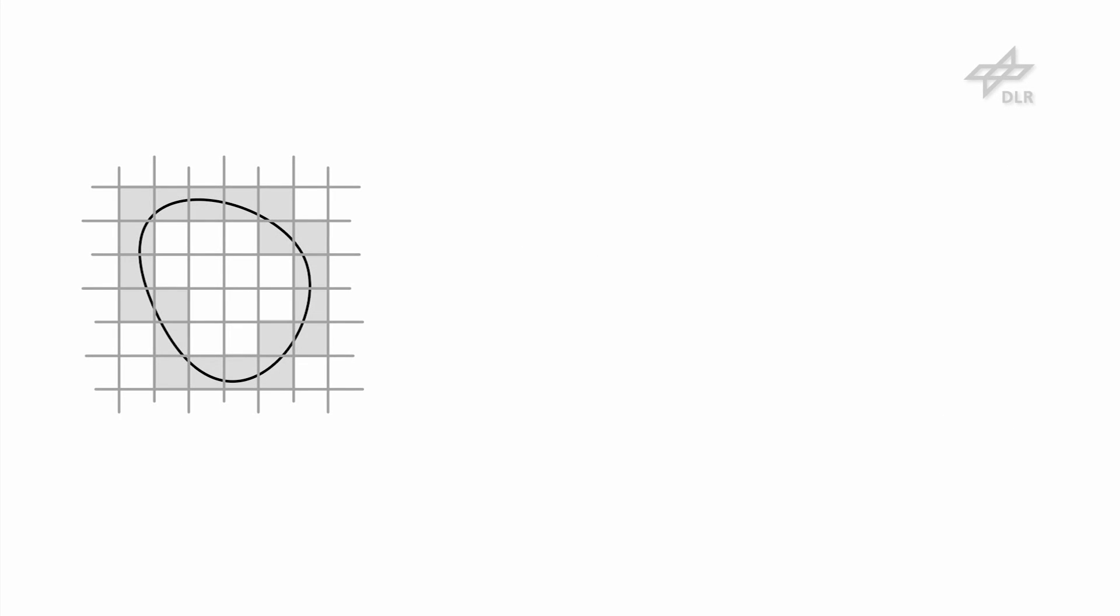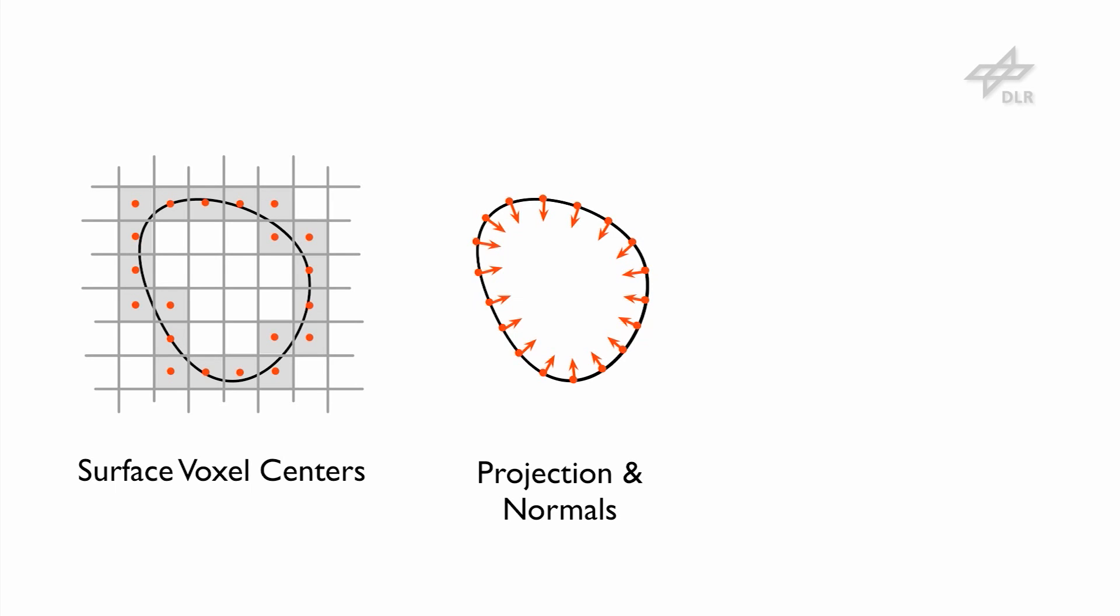In order to generate the point shell, the centers of the surface voxels are projected onto the object surface, optimizing their location for uniformity. Inwards-pointing normals are computed for each point.